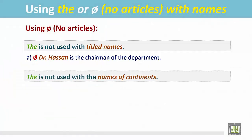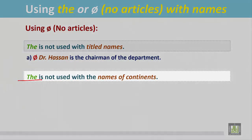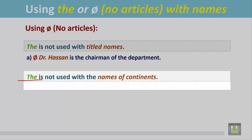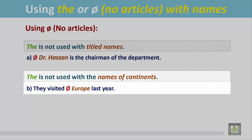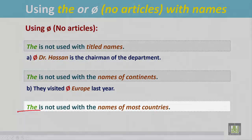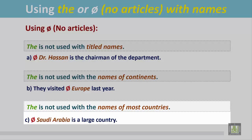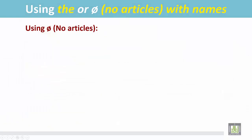'The' is not used with the names of continents, like Europe, America, and Africa. For example: 'They visited Europe last year.' Europe is the name of a continent and there is no article before it. 'The' is also not used with the names of most countries. For example, 'Saudi Arabia is a large country' — there is no article before Saudi Arabia, and this applies to most countries.